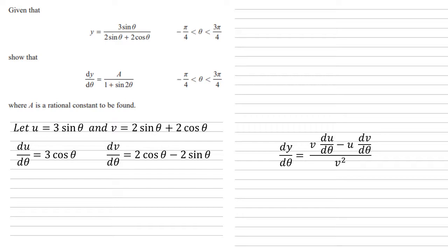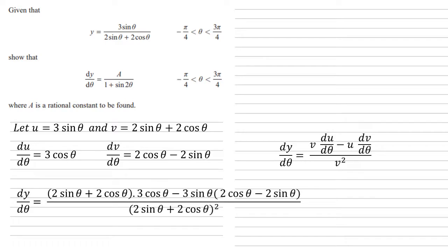We're now going to put these into our formula, so dy by d theta equals 2 sine theta plus 2 cos theta, all times 3 cos theta, minus 3 sine theta multiplied by 2 cos theta minus 2 sine theta, all of that over the square of 2 sine theta plus 2 cos theta.